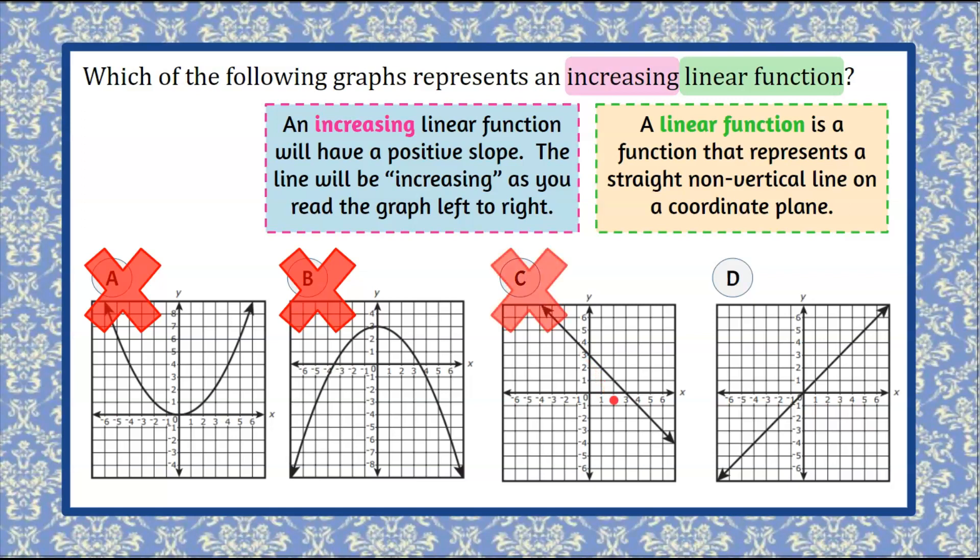We have one remaining. As we read this graph left to right, we can see that our line is going to have a positive slope, and it is increasing left to right. So answer choice D is our increasing linear function. And that is how we determine what is an increasing linear function on a coordinate plane.